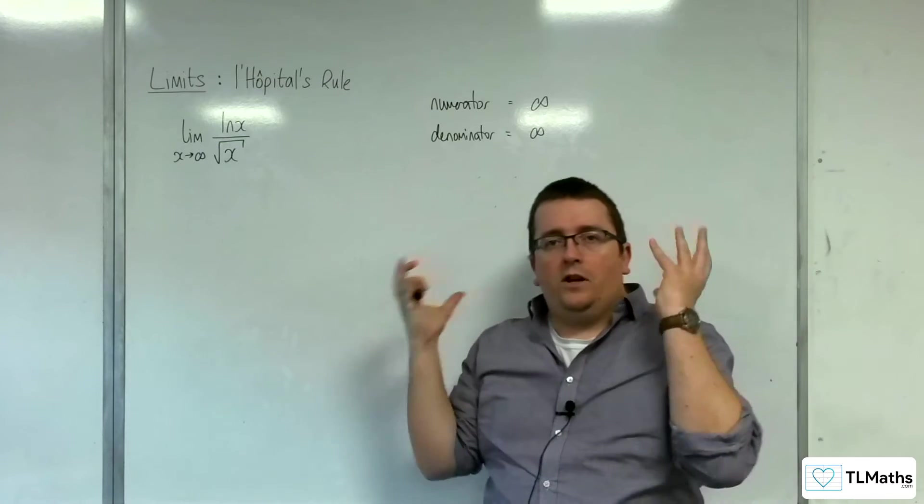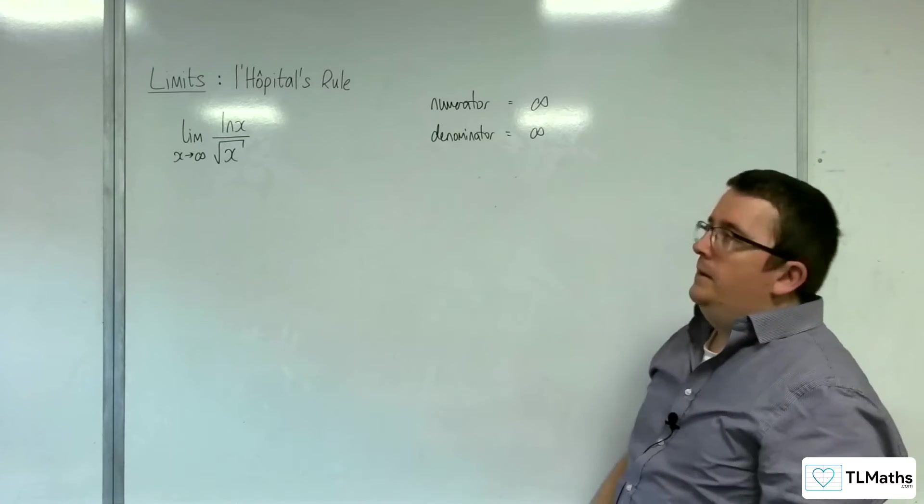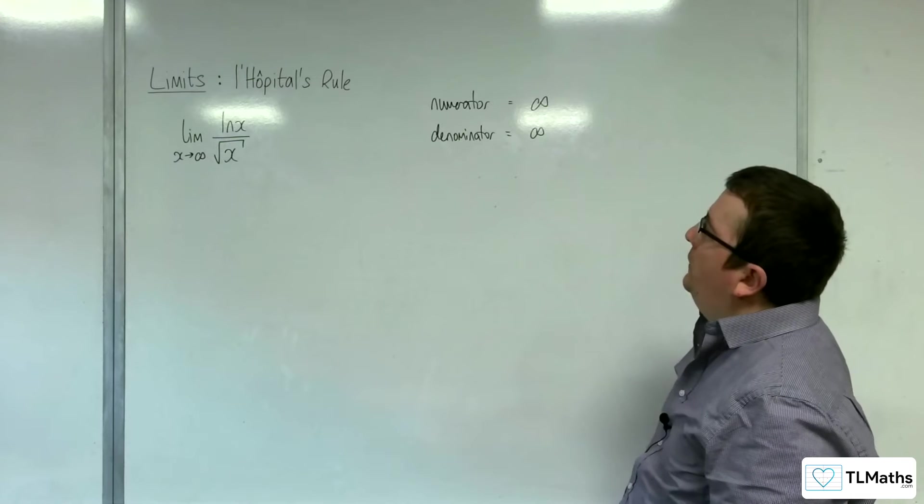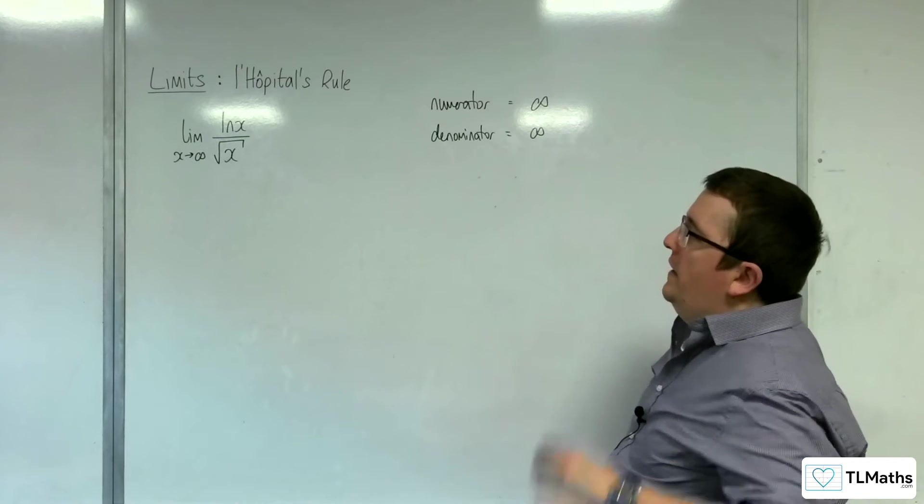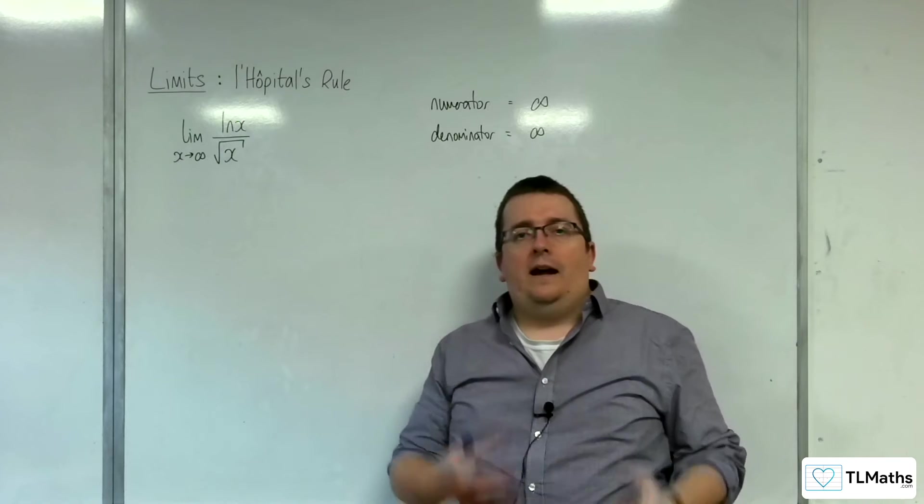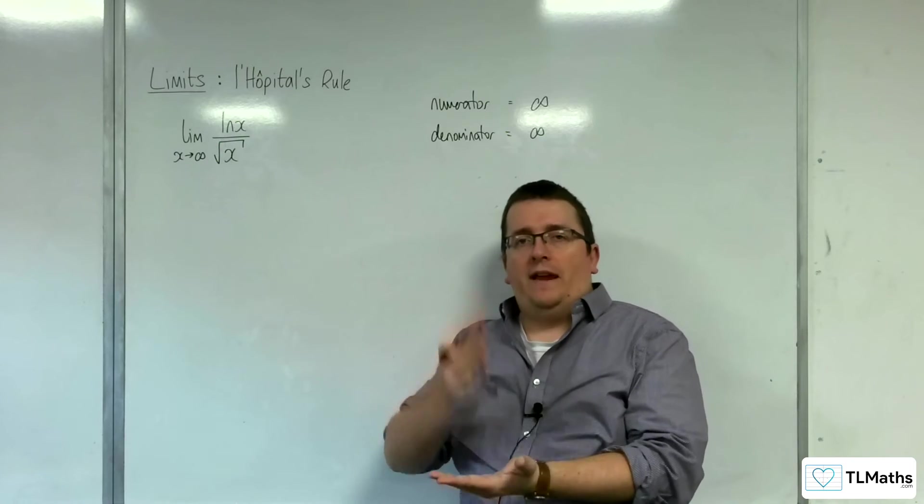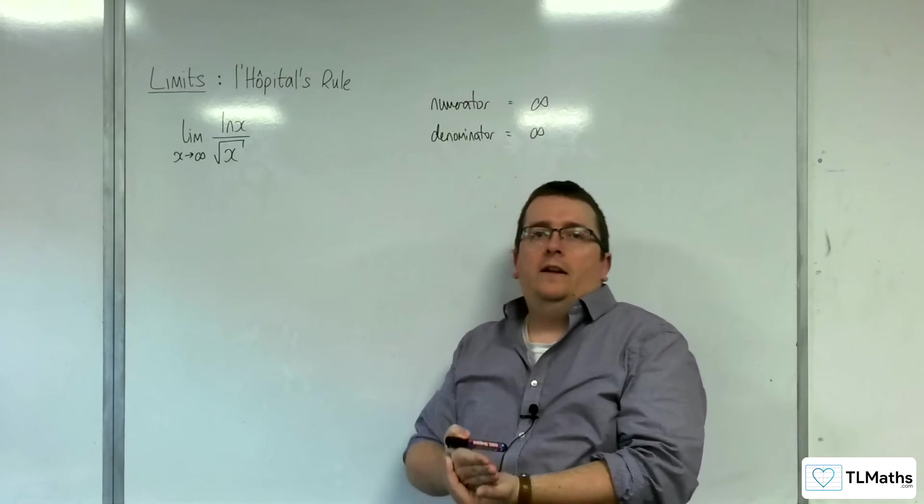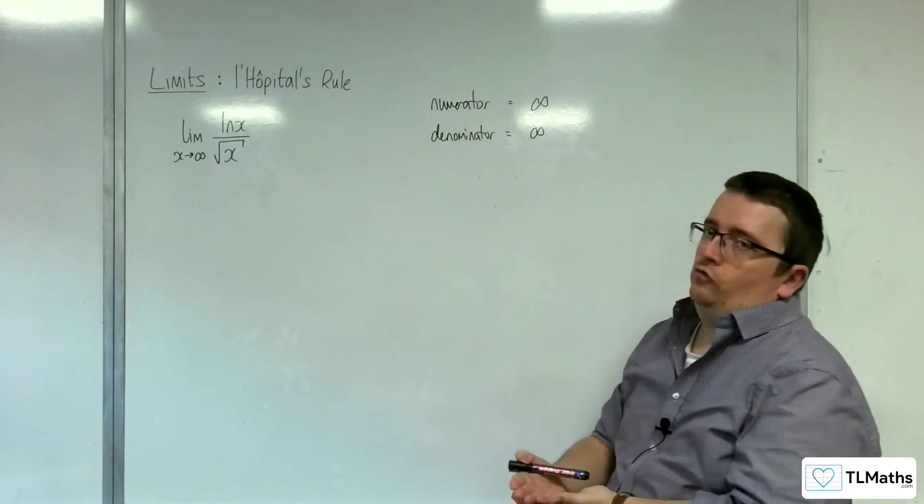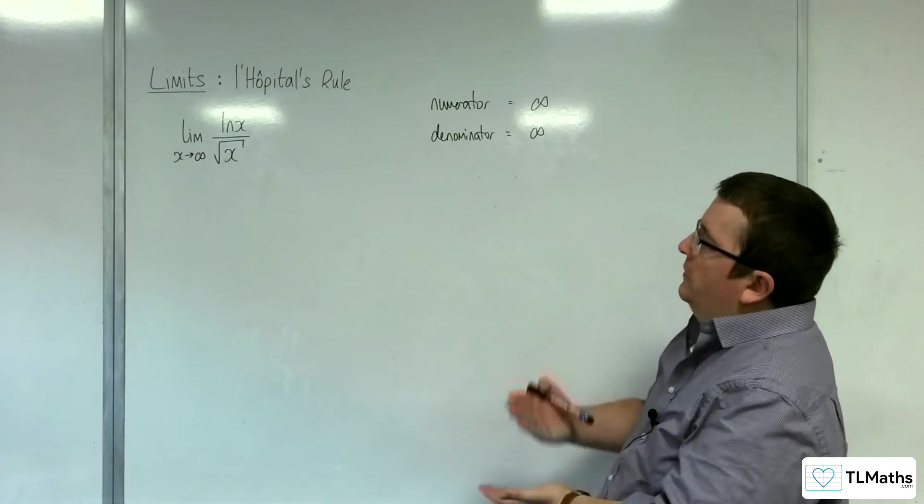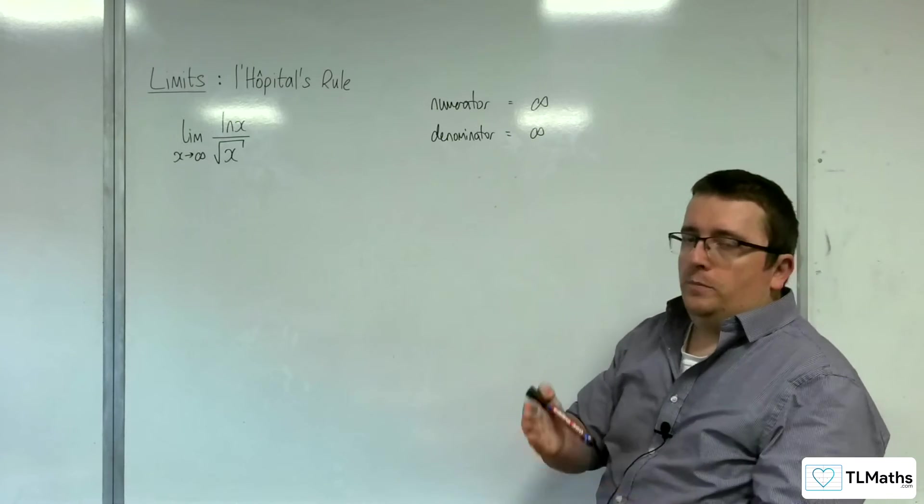Now remember, what I'm writing here, you might be going, oh no, he's written an equal sign with an infinity symbol, as if the top and bottom will equal infinity. This is really to show that we have indeterminate form, and that allows us to use L'Hopital's rule.